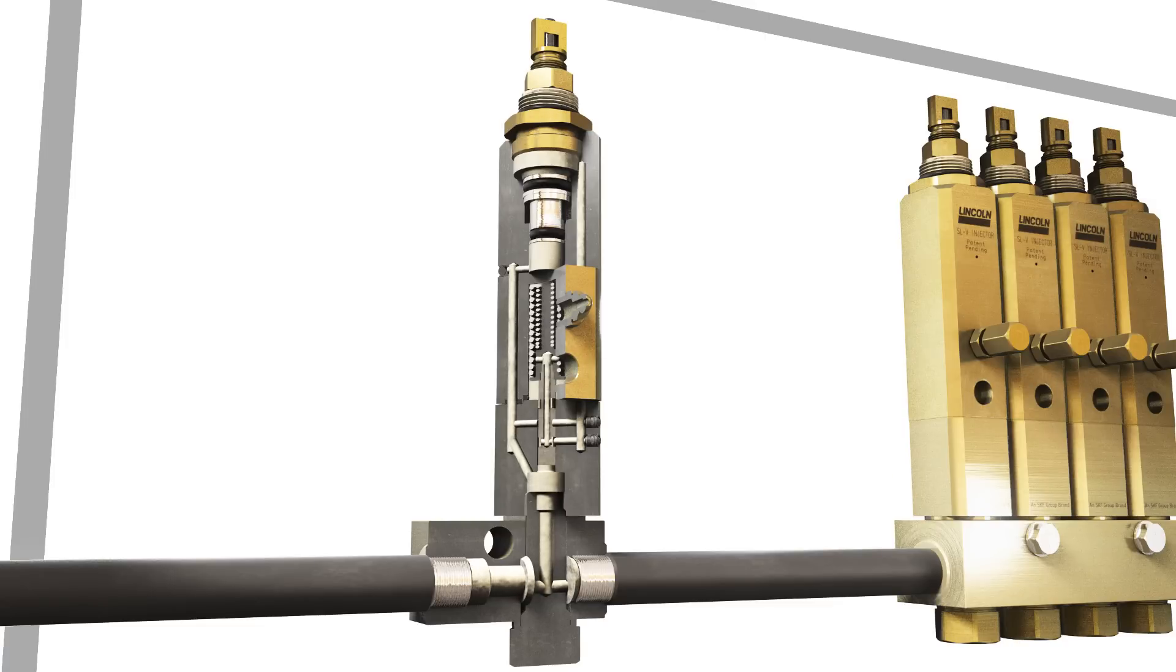Once all the injectors in the system have cycled, the supply line begins to vent. As the pressure in the supply line is vented down to 1,000 pounds per square inch, the slide valve moves back to its original position.